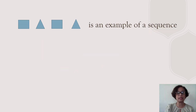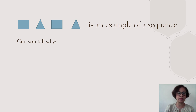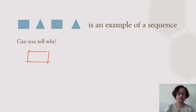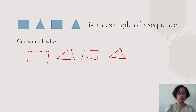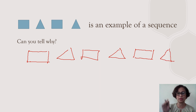Now let's look at a sequence made of shapes. We have a rectangle, then a triangle, then a rectangle again, then a triangle. It follows a certain order — an alternating order of rectangle, triangle. These are all blue shapes. So the next term in the pattern would be a rectangle, and the next would be a triangle. Again, it follows a specific order.